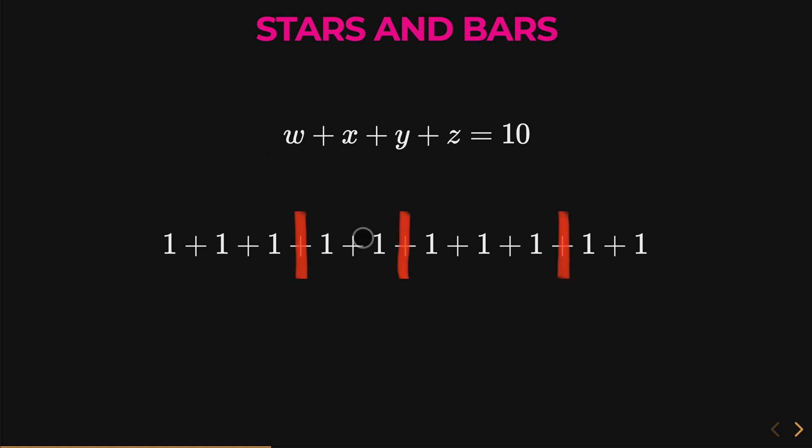Then we have one plus one, that's two, you can say that's x. One plus one plus one, that's three. And one plus one, that is two, and that can be z. As you can see, this is how you convert it into stars and bars. You simply just apply stars and bars to one plus one plus one plus one, ten times, to find how many solutions you can get.